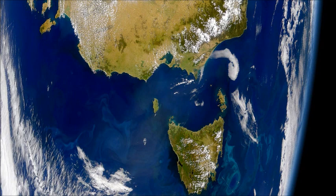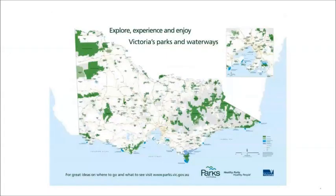Victoria has this wonderful south-facing coastline, and as we move across the state it's important to understand the transition from the Pacific to the cool waters of the Southern Ocean. This image is quite interesting — in the background you can actually see a whole lot of swirls and material moving around. These are actually plankton blooms occurring out in the Southern Ocean.